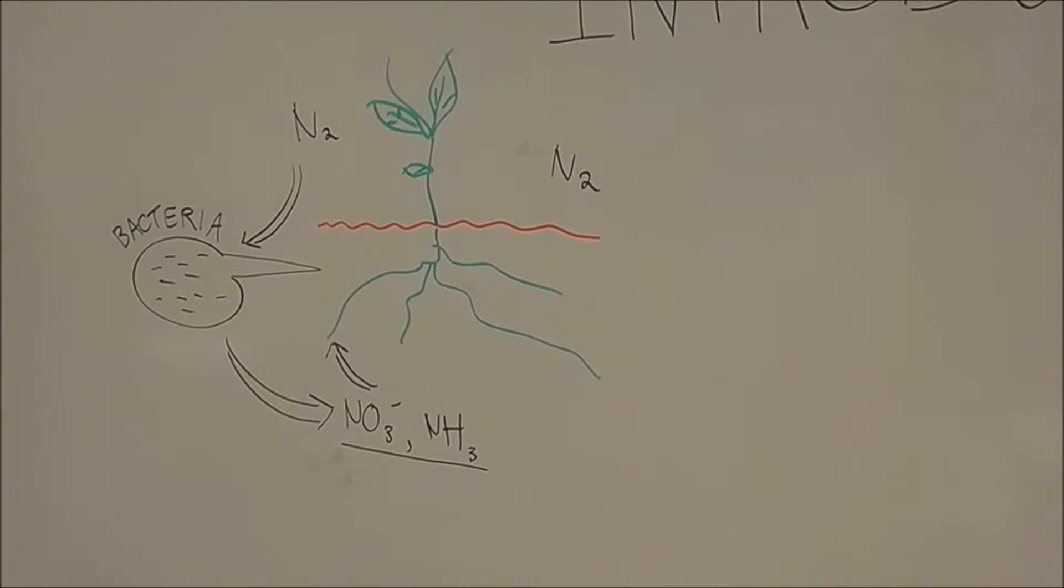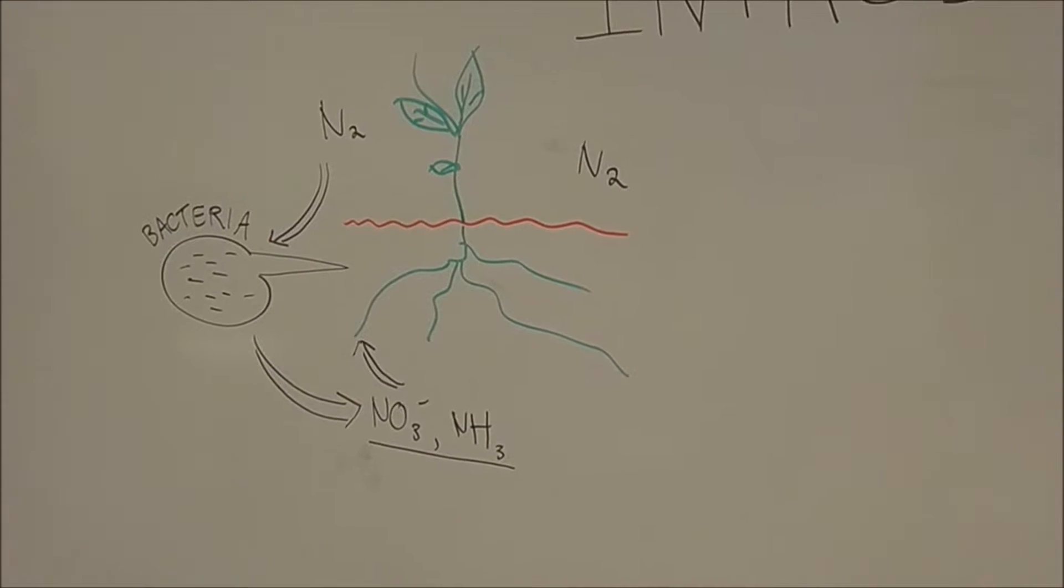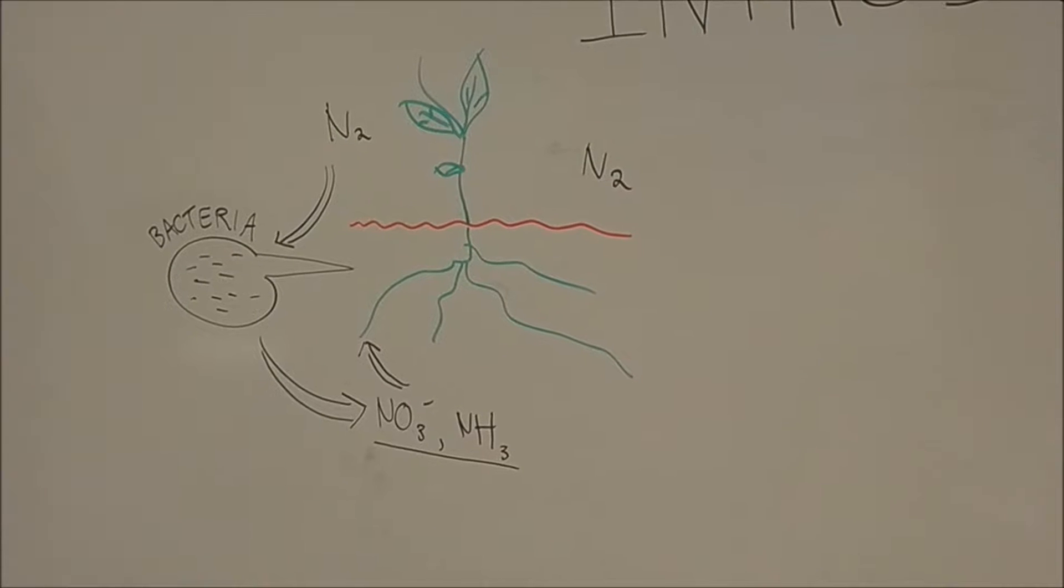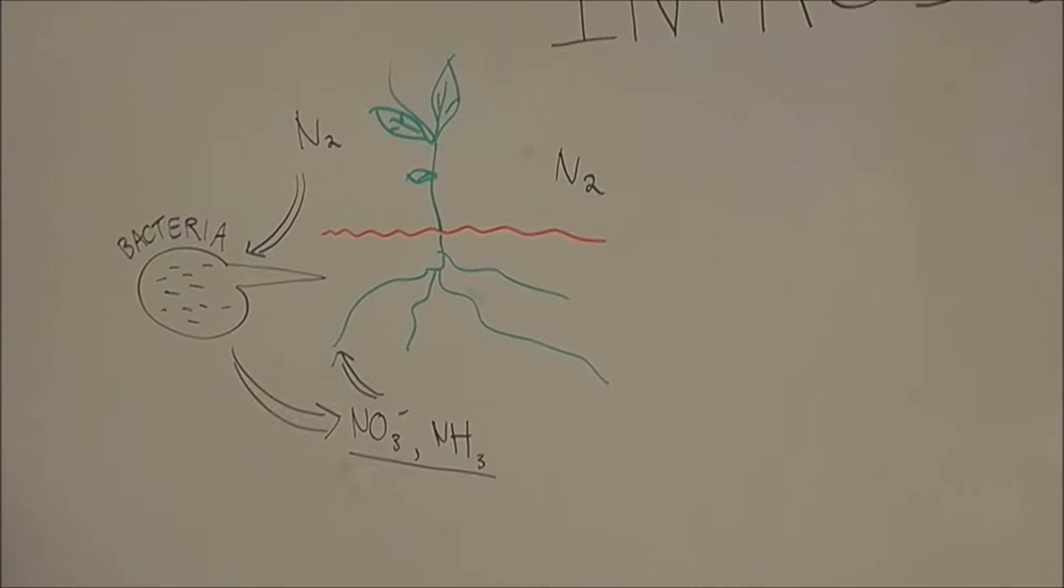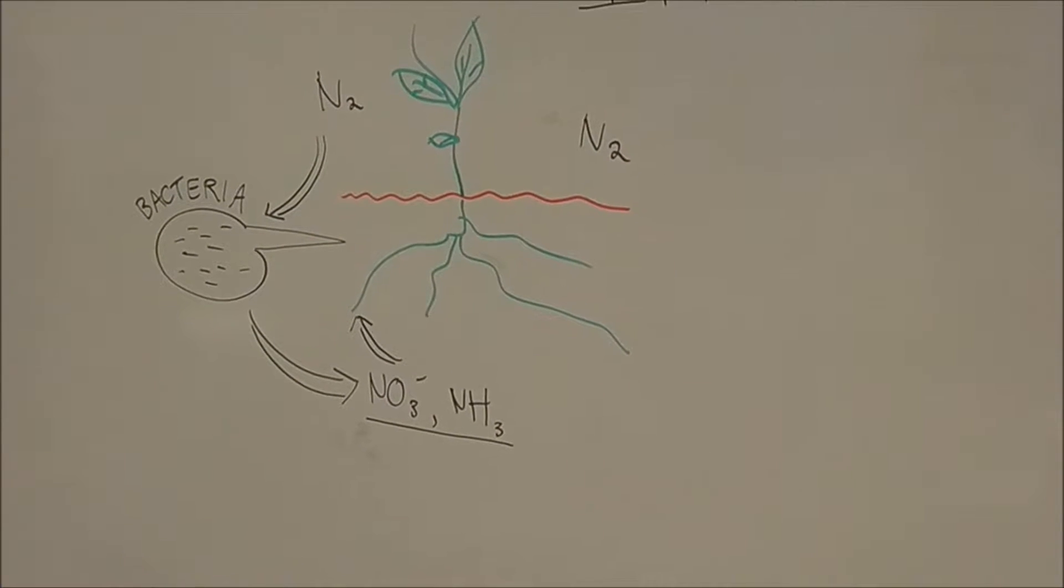The most abundant form of nitrogen, nitrogen gas, has a highly stable triple bond which won't be broken naturally. So the nitrogen gas must be converted to one of these forms before it can be useful in the soil.